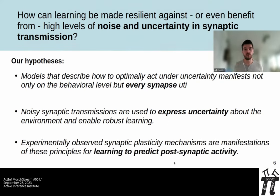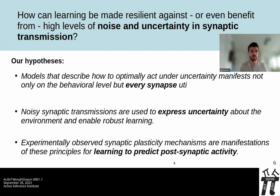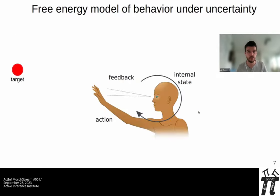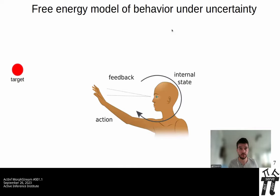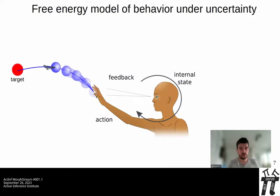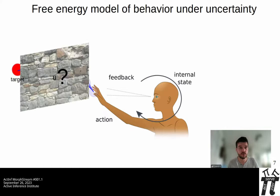We can use this model to derive learning rules and compare them to biology. I'll give a quick introduction to the free energy model. It describes a situation where a person interacts with some environment — for example, trying to throw a ball to some target, receiving visual feedback, but a lot of the feedback may be hidden, like the ball going behind a wall. The person would predict the trajectory and make an accurate action.